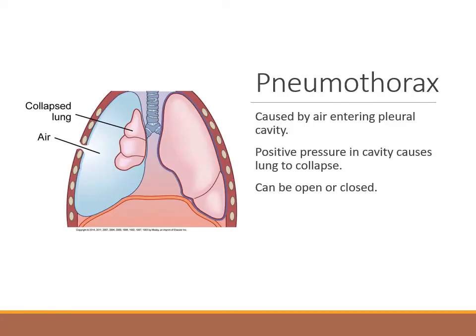A pneumothorax is caused by air entering the pleural cavity. Normally, negative pressure exists between the visceral pleura, which surrounds the lung, and the parietal pleura, lining the thoracic cavity, allowing the lung to be filled by chest wall expansion. This space contains only a few millimeters of lubricating fluid to reduce friction when the tissues move. When air enters this space, the change to positive pressure causes a partial or complete lung collapse. As the volume of air in the pleural space increases, the lung volume decreases.